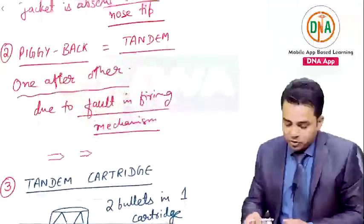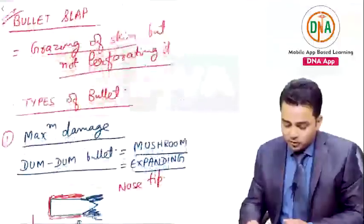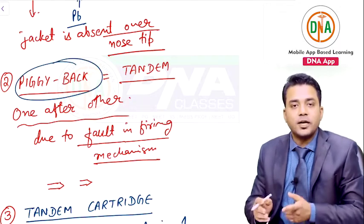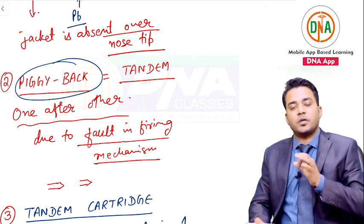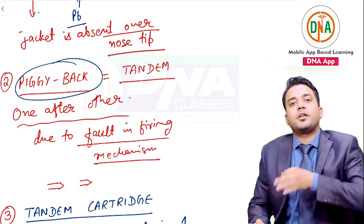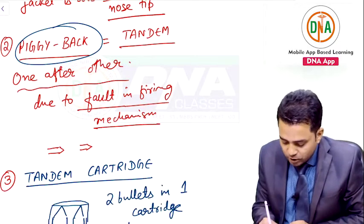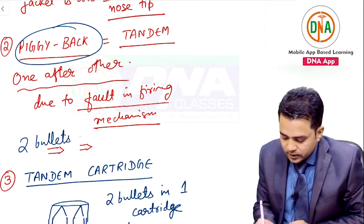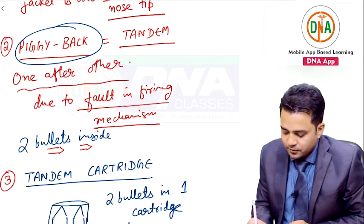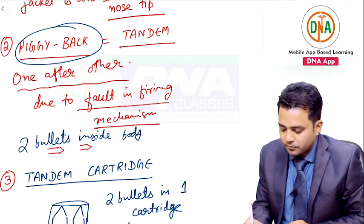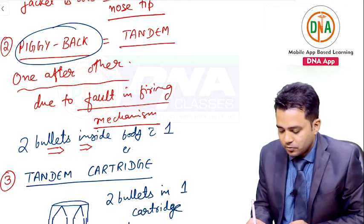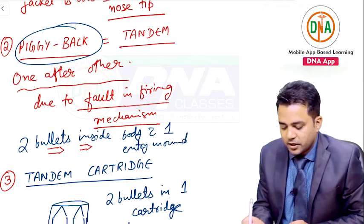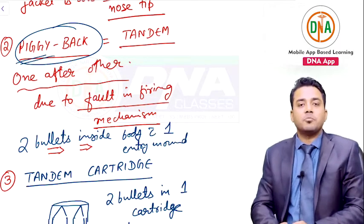In the case of piggyback or tandem bullet, two bullets may be found inside the body but with only one entry wound. So if you find two bullets inside the body with one entry wound, the case is that of a piggyback or tandem bullet.